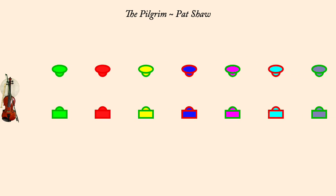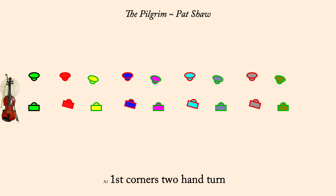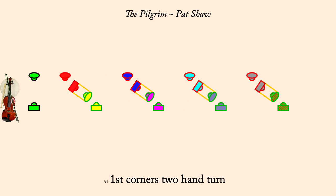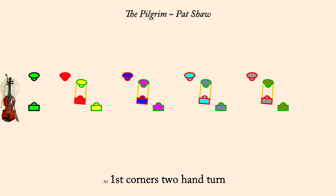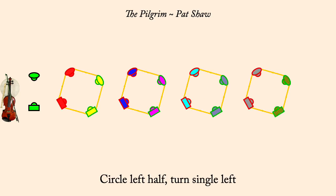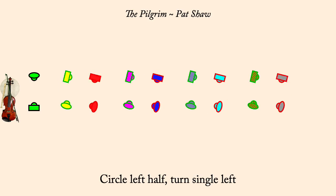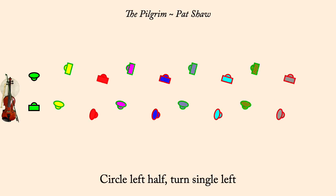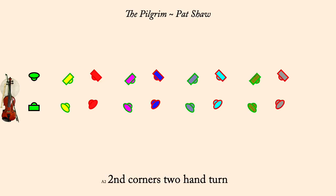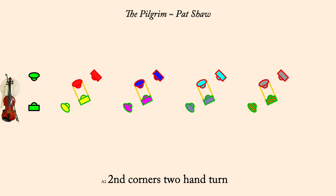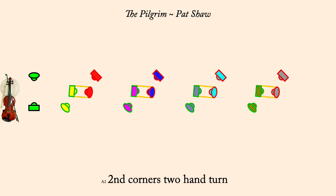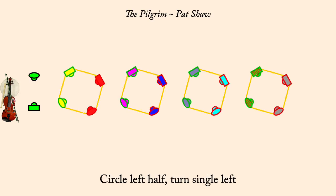First corners, two-hand turn. Circle left half, turn single left. Second corners, two-hand turn. Circle left half, turn single left.